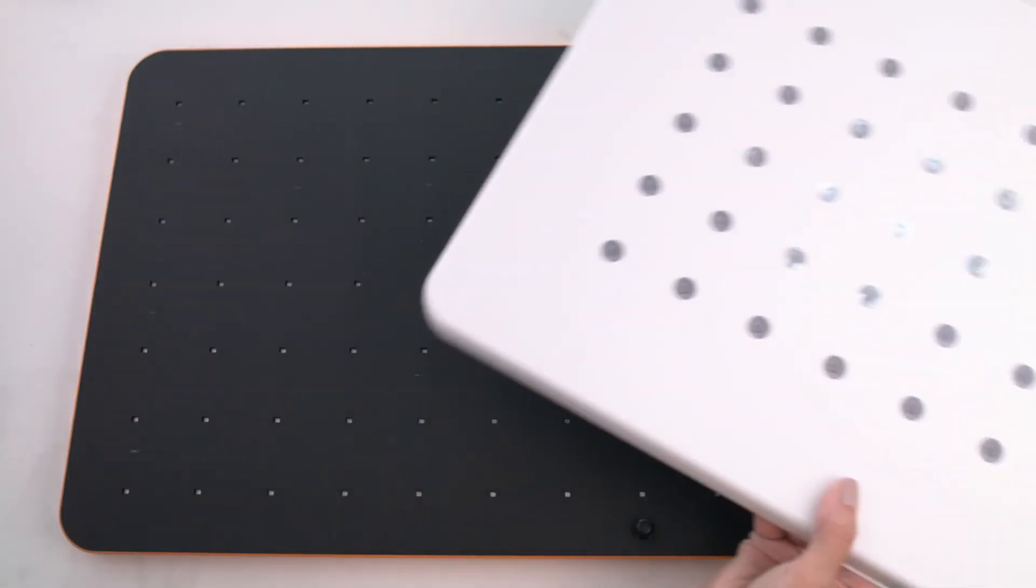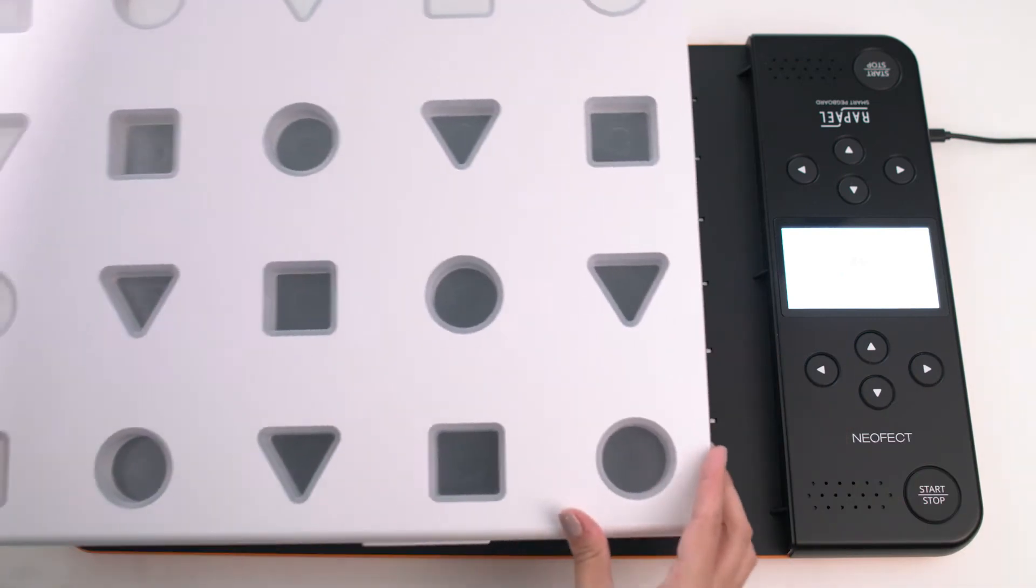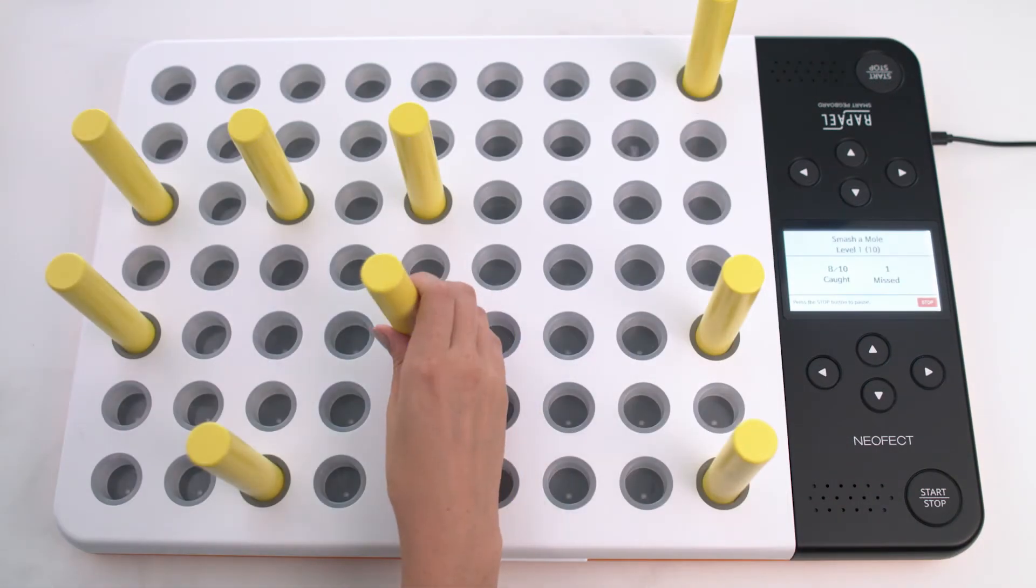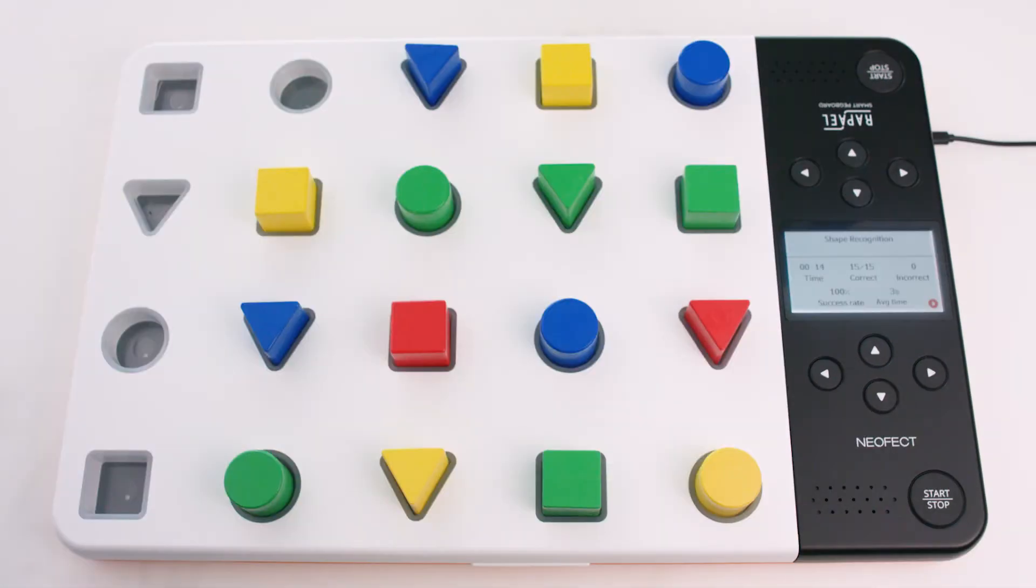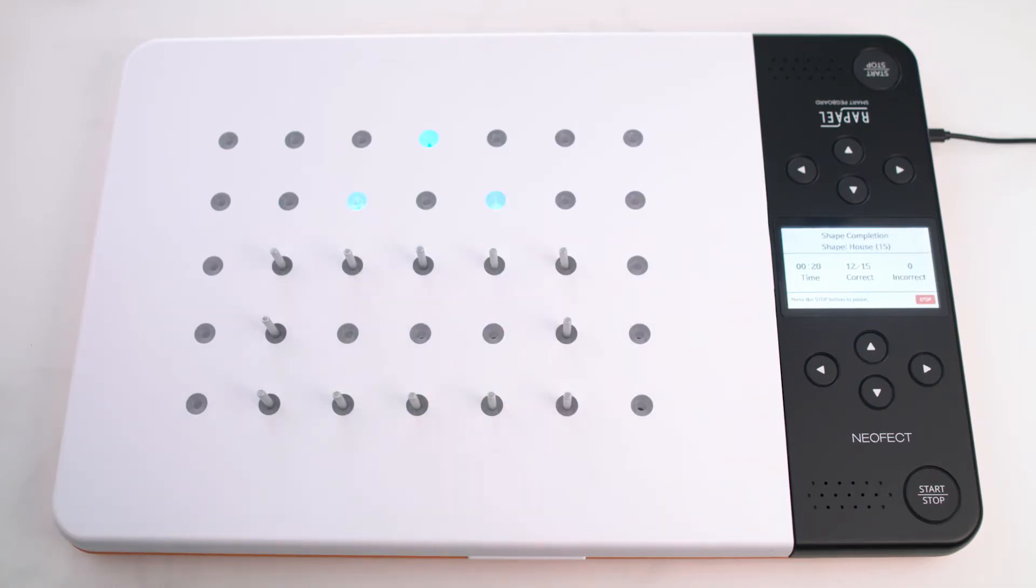The Smart Pegboard system is made up of three interchangeable boards including the standard board, mixed shape board, and pinch board along with the corresponding pegs.